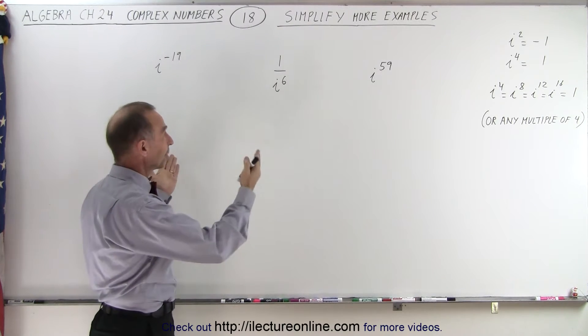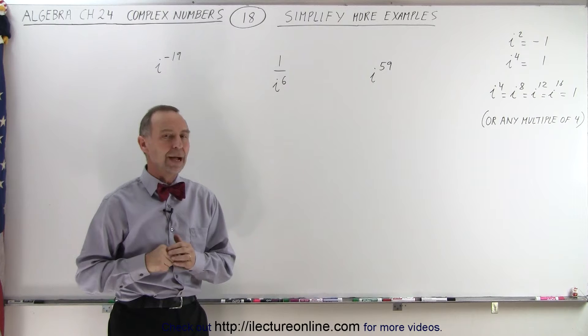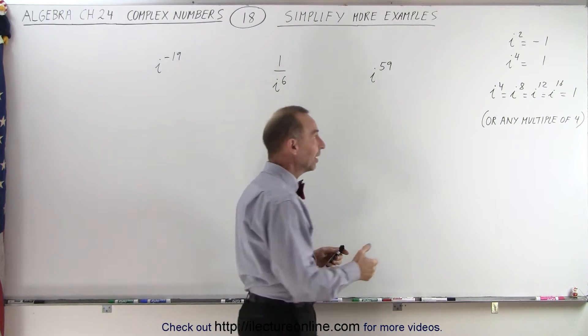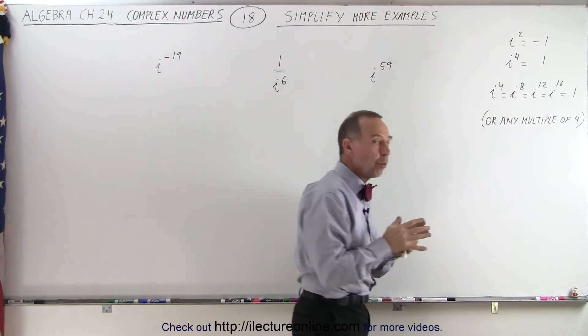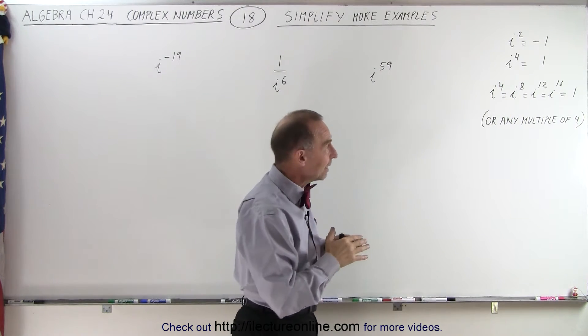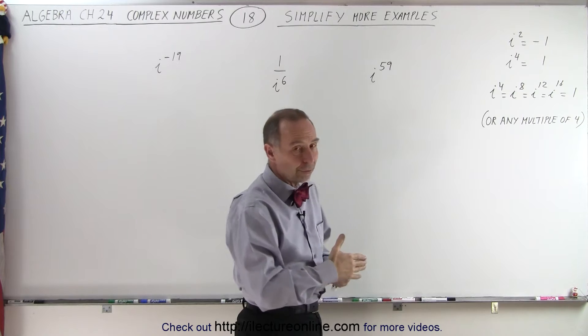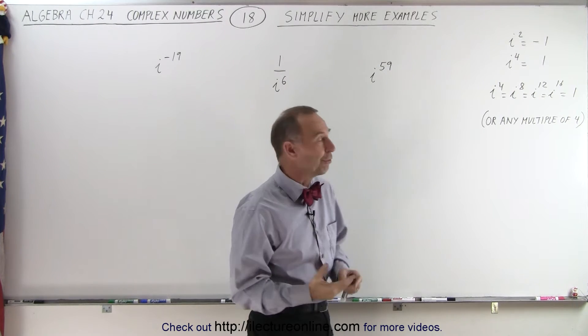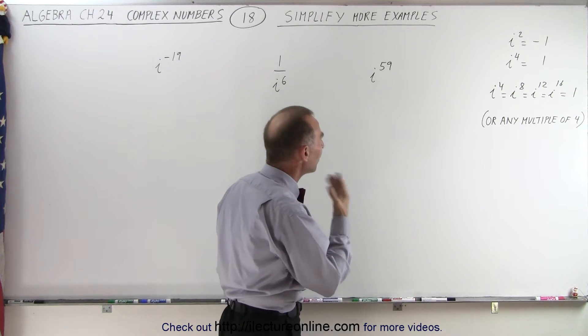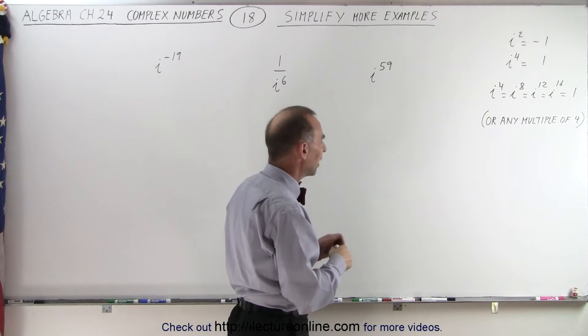How do we simplify something like i to the 59th power? From the previous video we realized that any exponent that's a multiple of 4 for the i is simply equal to 1. i to the 4th, i to the 8th, i to the 16th, i to the 32nd and so forth.